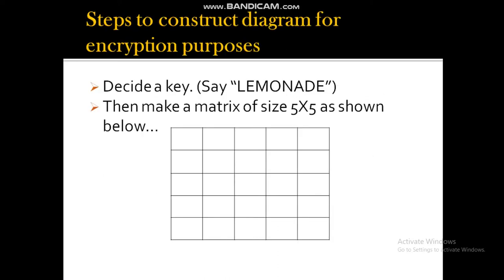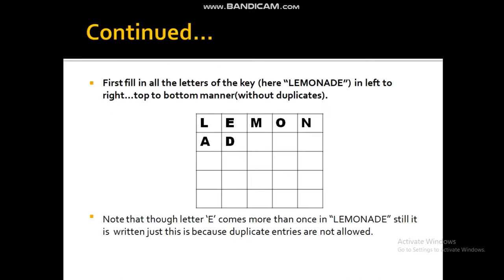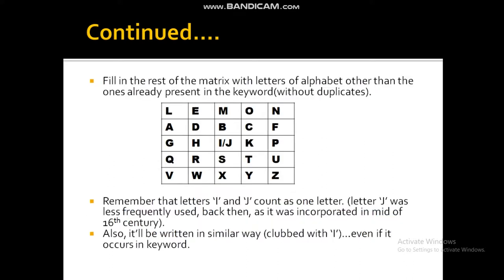What are the steps to use a diagram for encryption purposes? Firstly, you need to decide a key — here, say 'lemonade'. Make a matrix of size 5x5. Fill in the letters of the keyword in left-to-right, top-to-bottom fashion in the matrix. You must not write duplicate letters; for example, E has occurred twice, so it will be written just once. Now fill in the letters of the alphabet other than the ones already present in the keyword.